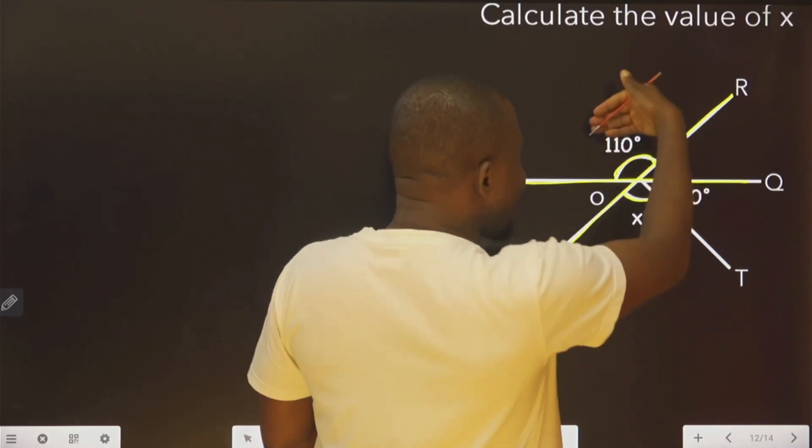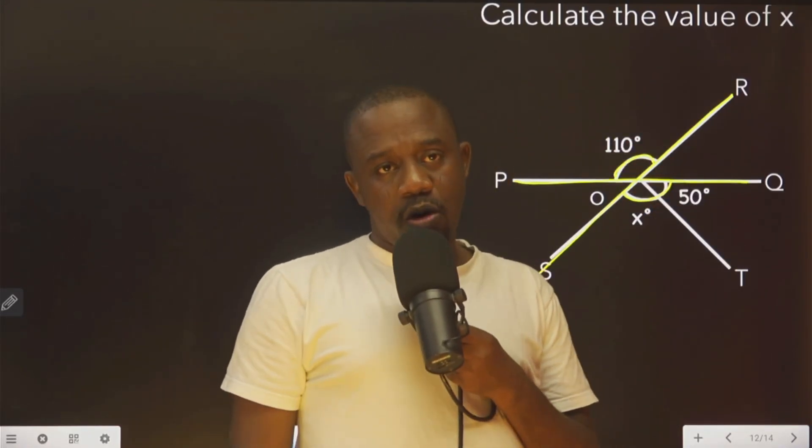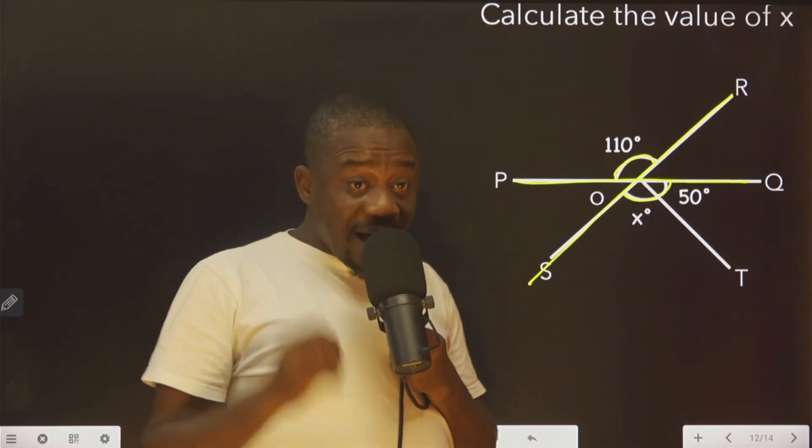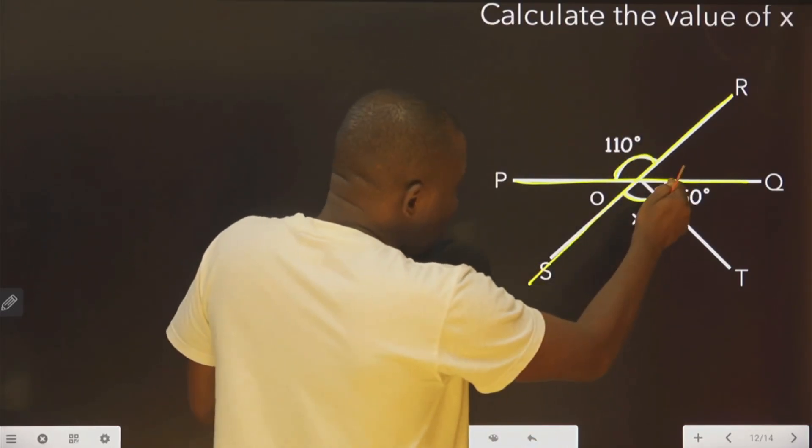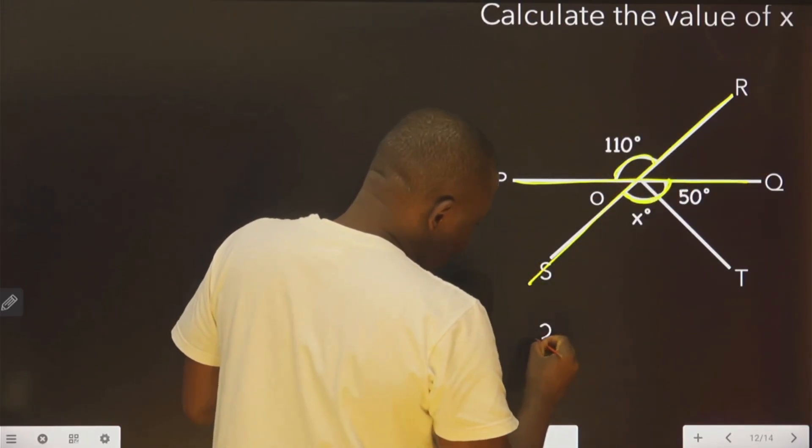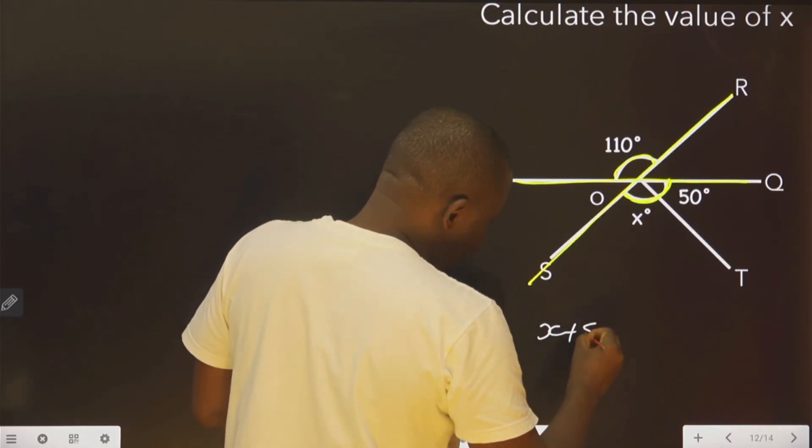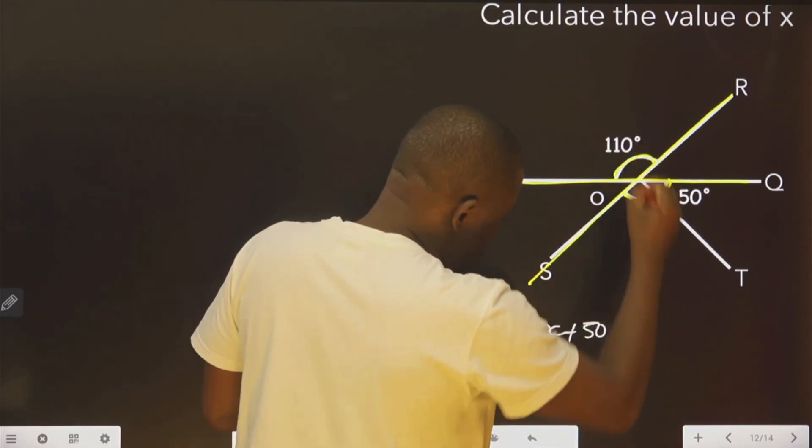Vertically opposite angles are always equal. So therefore, we are going to say these two angles, X plus 50, they are both equal to 110.